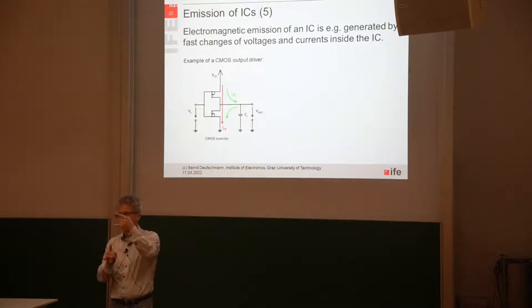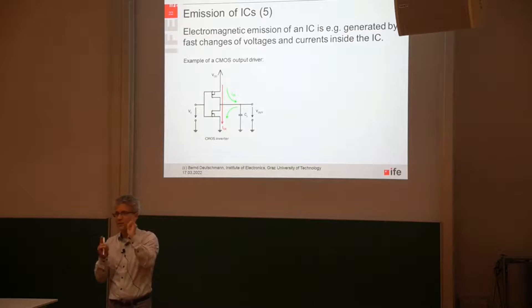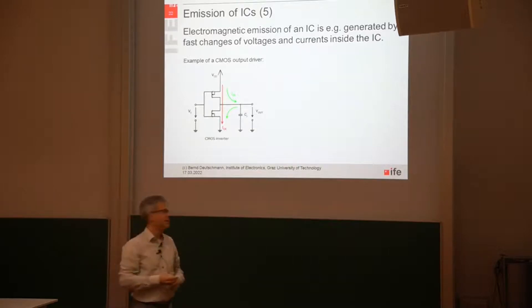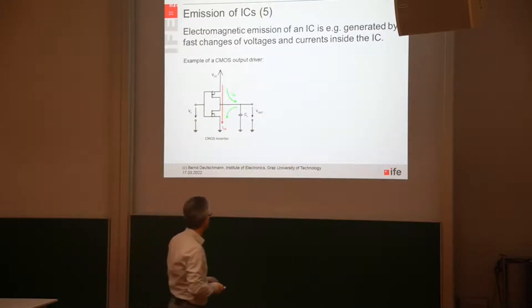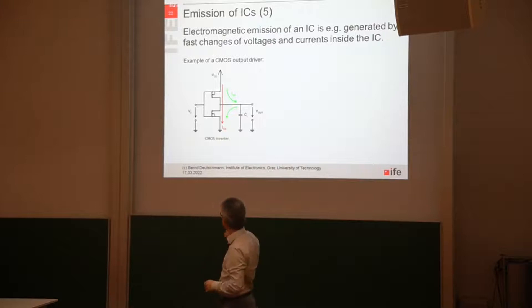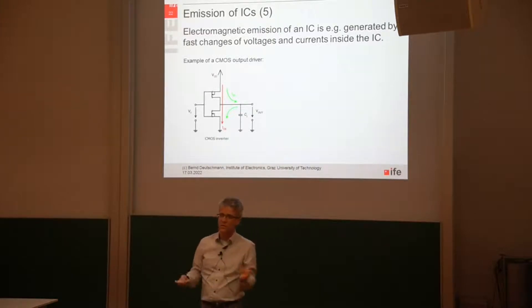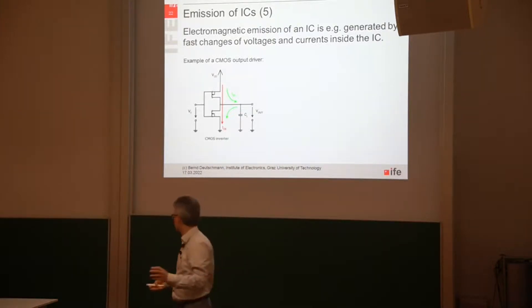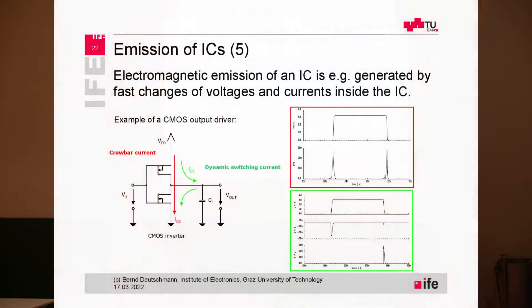They are not turned on forever — just for a very short amount of time. So the short is not that critical, but it's generating a big current spike, a big dI/dt. This is called crowbar current, shoot-through current — you name it. So this is one source of the electromagnetic emission.